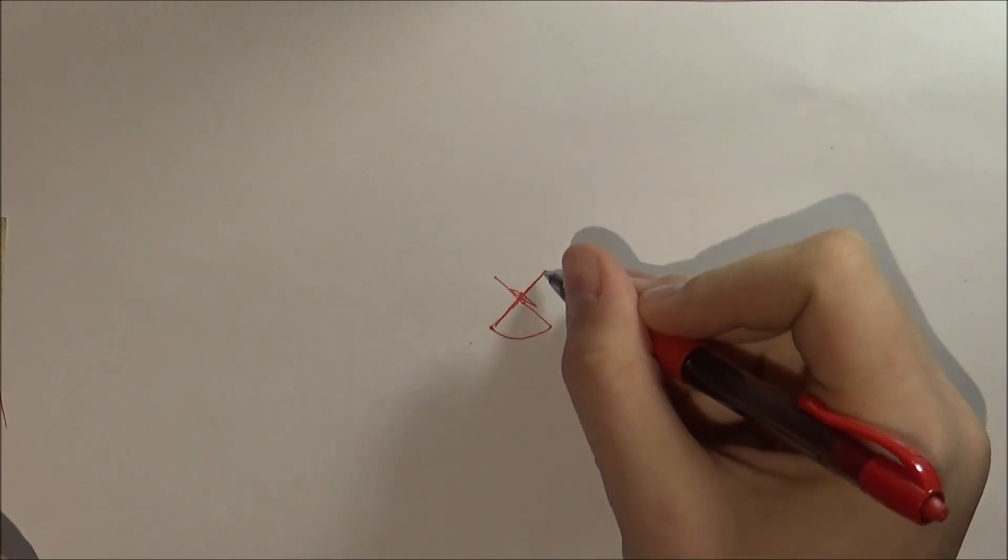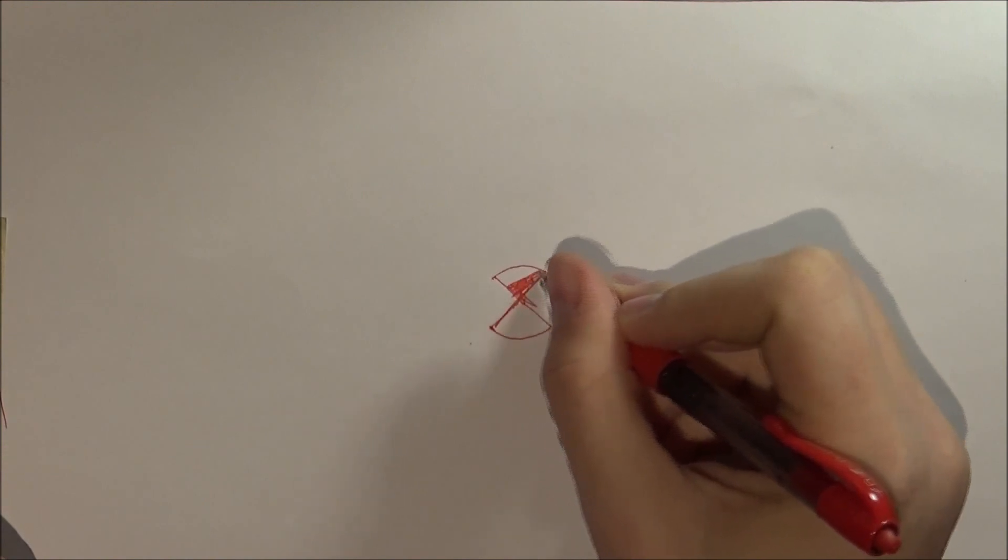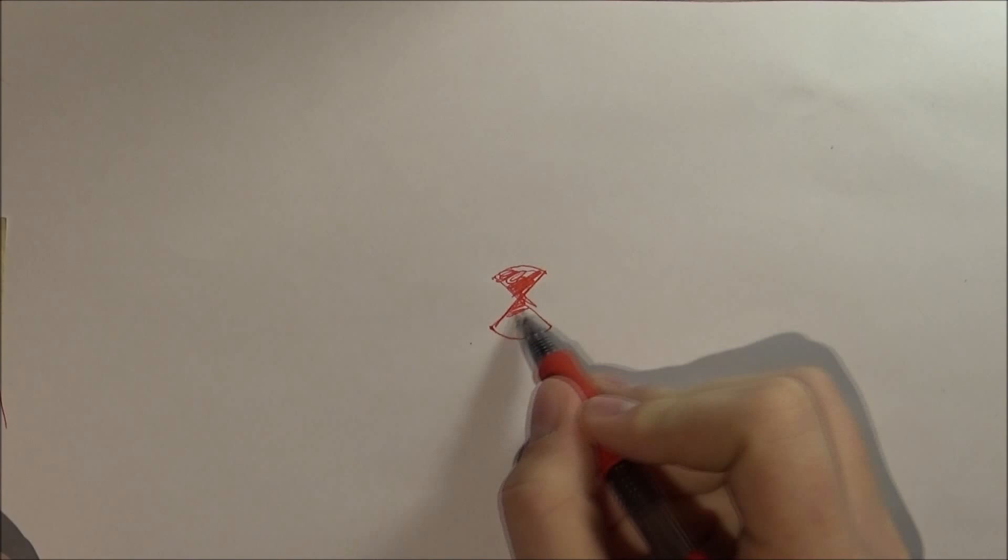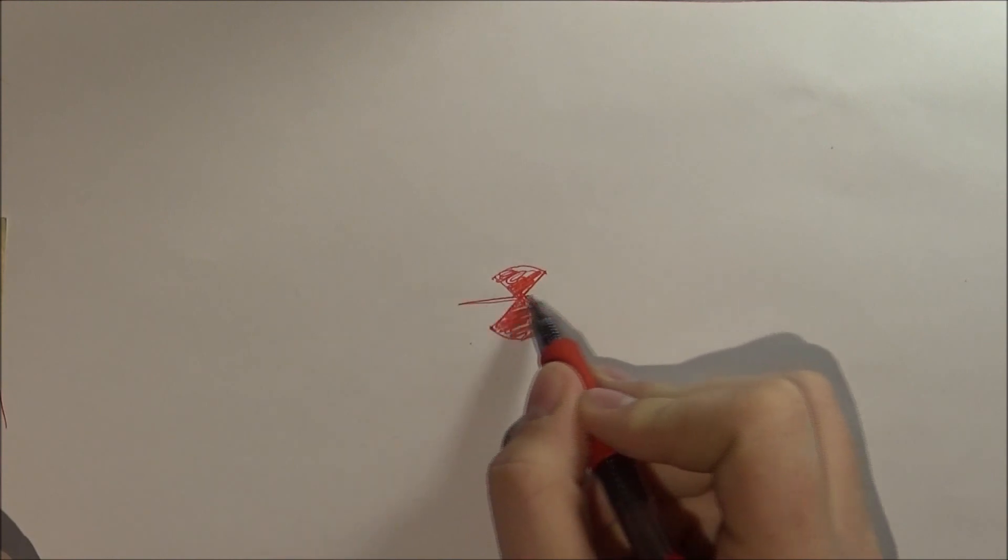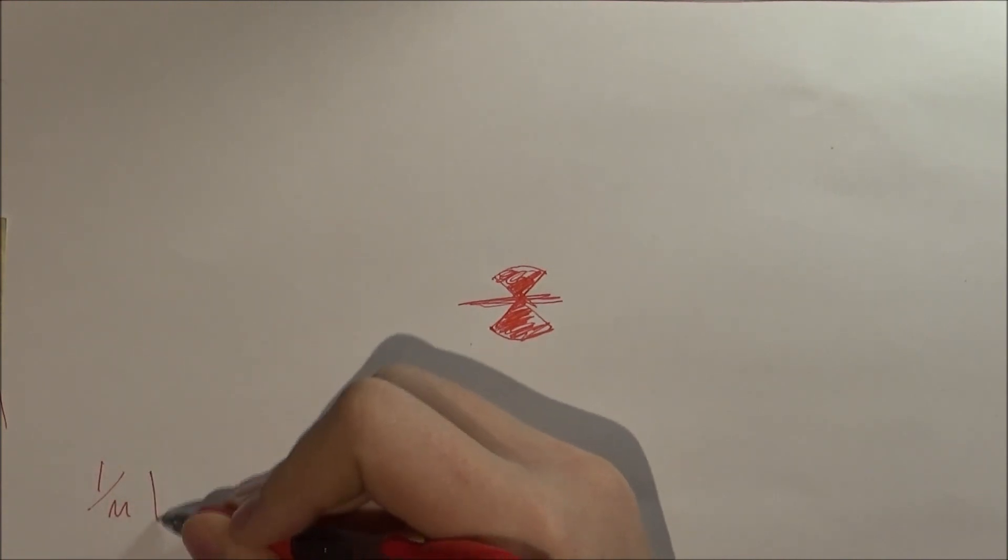All right, today I'm going to be demonstrating the equation to find the velocity of an electron. I just learned this, it's very interesting. Now it's not that complex, it's just some basic algebra. It's one half mass times velocity squared.